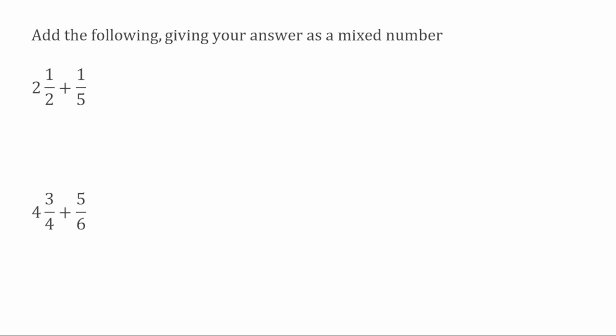Now we've got a question where we're adding a mixed number to a proper fraction. Again, I'm going to follow the same method. The only whole number part we've got is two, so I'm just going to write this two down, ready to add on to our fraction later. Now I'm going to take the fraction parts — the one over two and the one over five — and add them together. We need a common denominator, so we look for the lowest common multiple of two and five, which is actually ten.